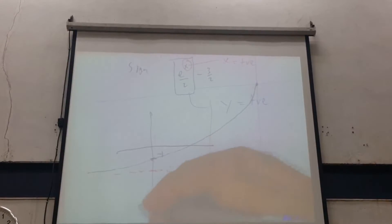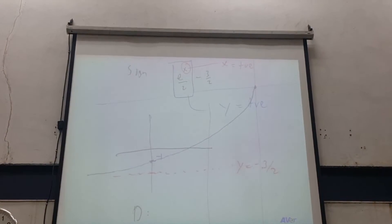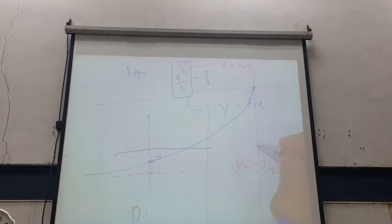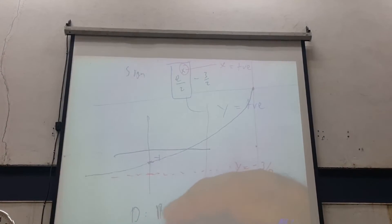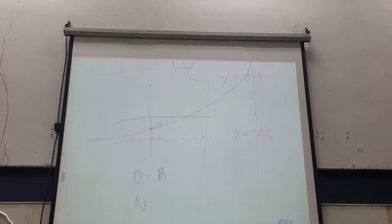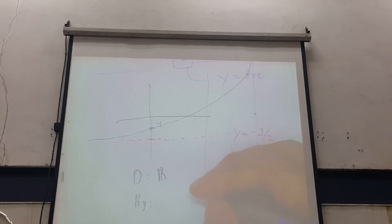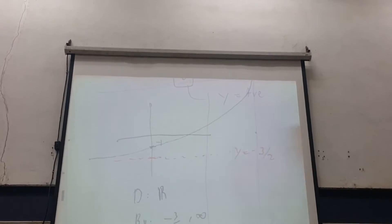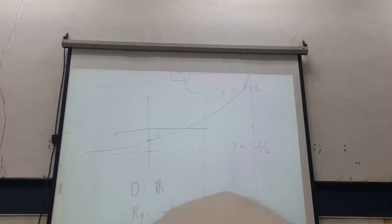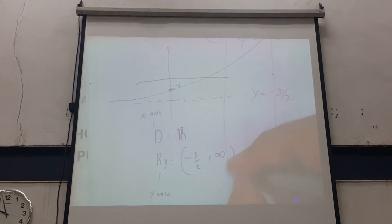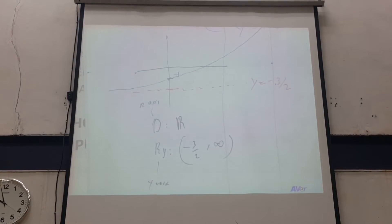So what's the domain for this graph? X. Negative infinity to positive infinity. So what can we say? All real numbers. What about the range? Negative 3 over 2 to infinity. Where do you get this value? The Y axis. Range is Y axis, domain is X axis. Negative 3 over 2 — do we touch it? No, it's open. Are you okay? Yes. Very good.